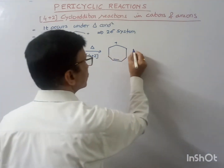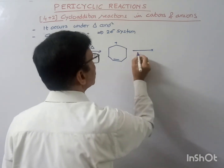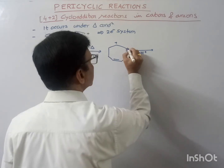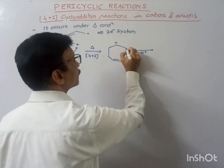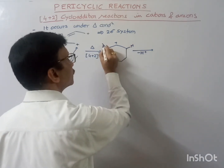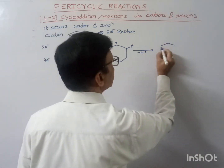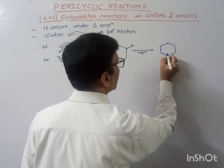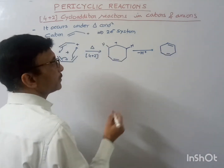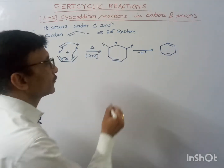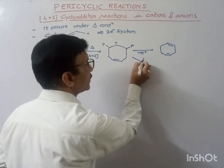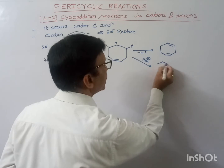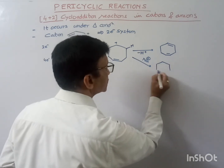This is our formed product. After the removal of H+, so either the H+ may be removed from here or it may be removed from the other position and we may get the product. Or in presence of some nucleophile, if we have a nucleophile, the nucleophile may also attack over here and we may get a product like this.